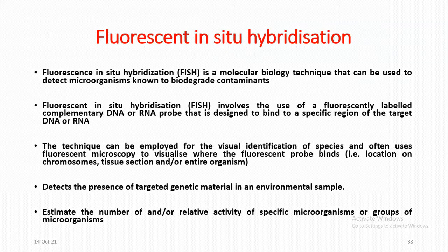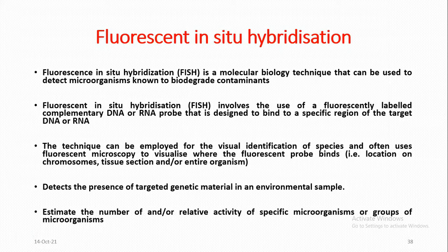Fluorescent in-situ hybridization (FISH) is a molecular biology technique that can be used to detect microorganisms known to biodegrade contaminants. FISH involves the use of a fluorescently labeled complementary DNA or RNA probe that is designed to bind to a specific region of the target DNA or RNA. The technique can be employed for the visual identification of species and often uses fluorescent microscopy to visualize where the fluorescent probe binds — that is, location on chromosomes, tissue sections, and entire organisms. FISH detects the presence of targeted genetic material in an environmental sample and estimates the number and relative activity of specific microorganisms or groups of microorganisms.